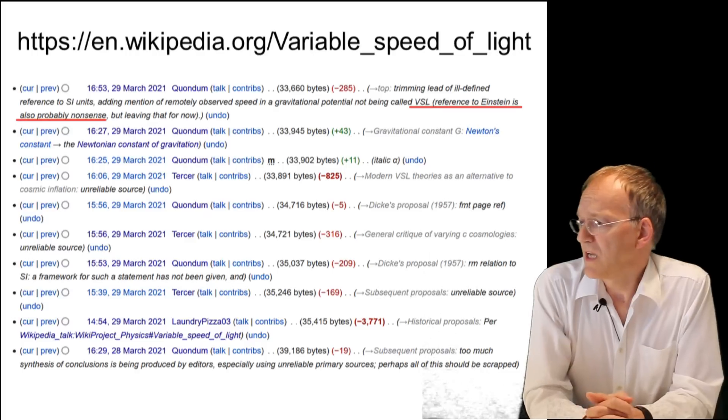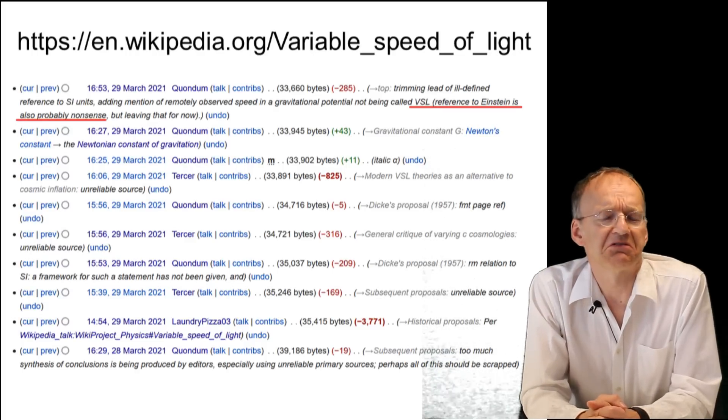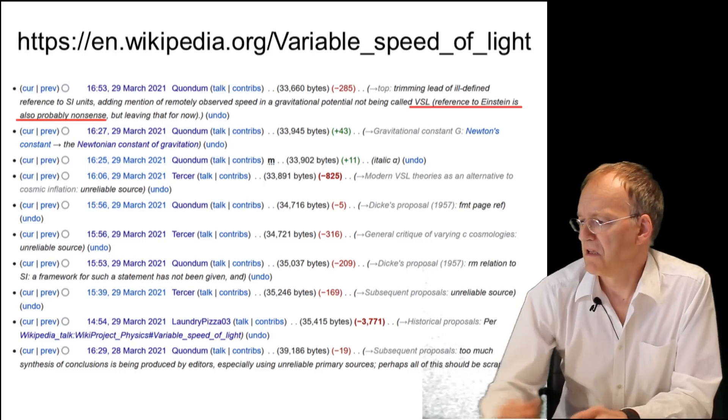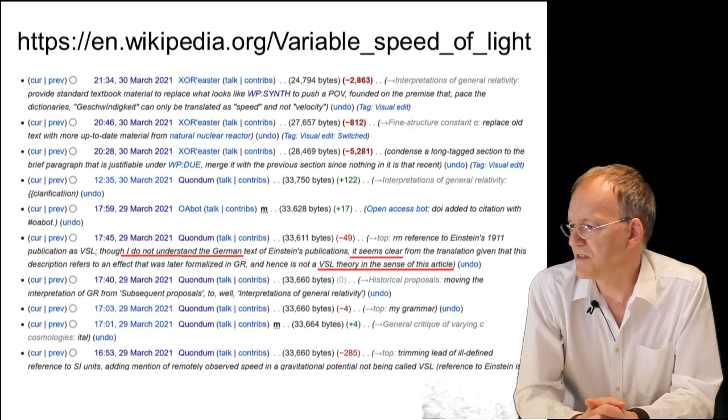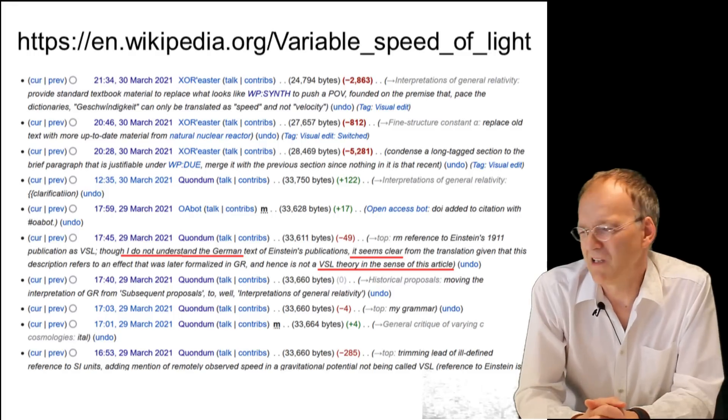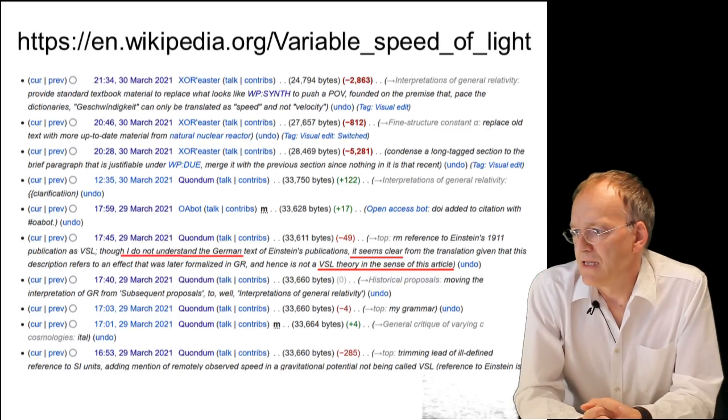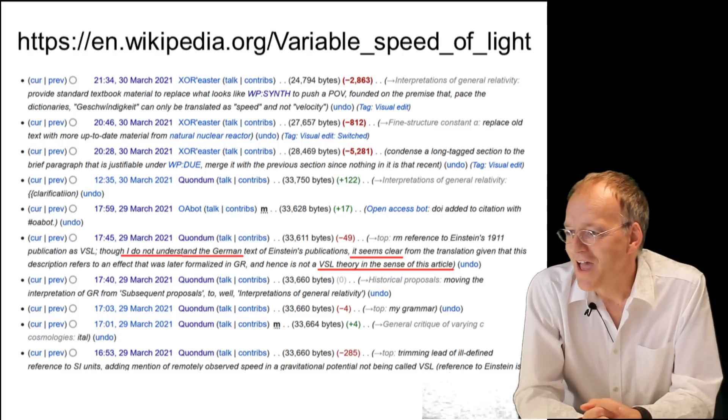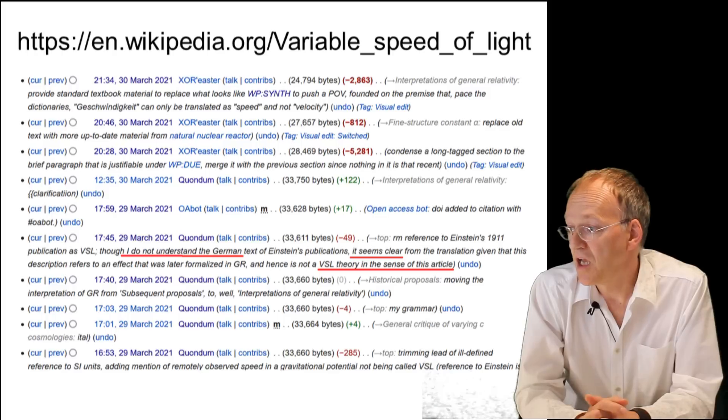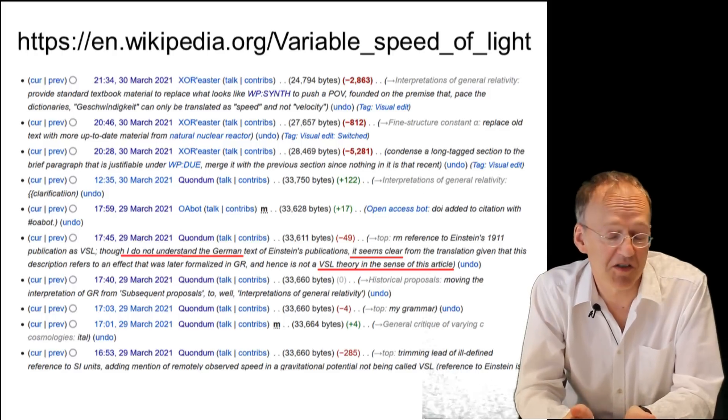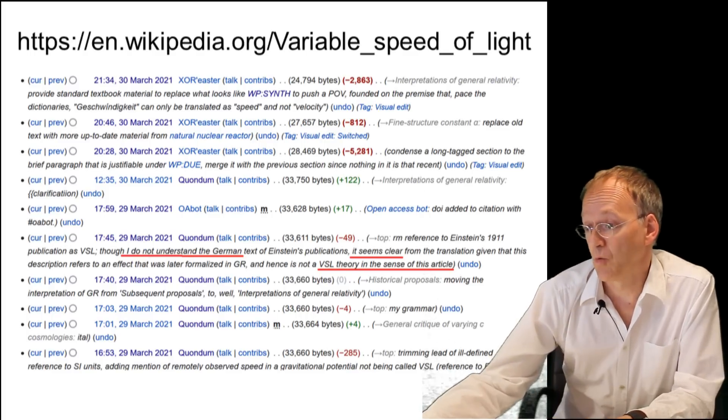Yeah, we read this one guy commenting: 'The reference to variable speed of light is also probably nonsense,' he thinks. And then he says, 'There is no relation to variable speed of light in the sense of this article.' Well, I guess the problem is you cannot make sense of the article right here. And I particularly love this: the guy who changed it says 'I do not understand the German but it seems.' Okay, that naturally begs the question: if you don't understand, why don't you just shut up?